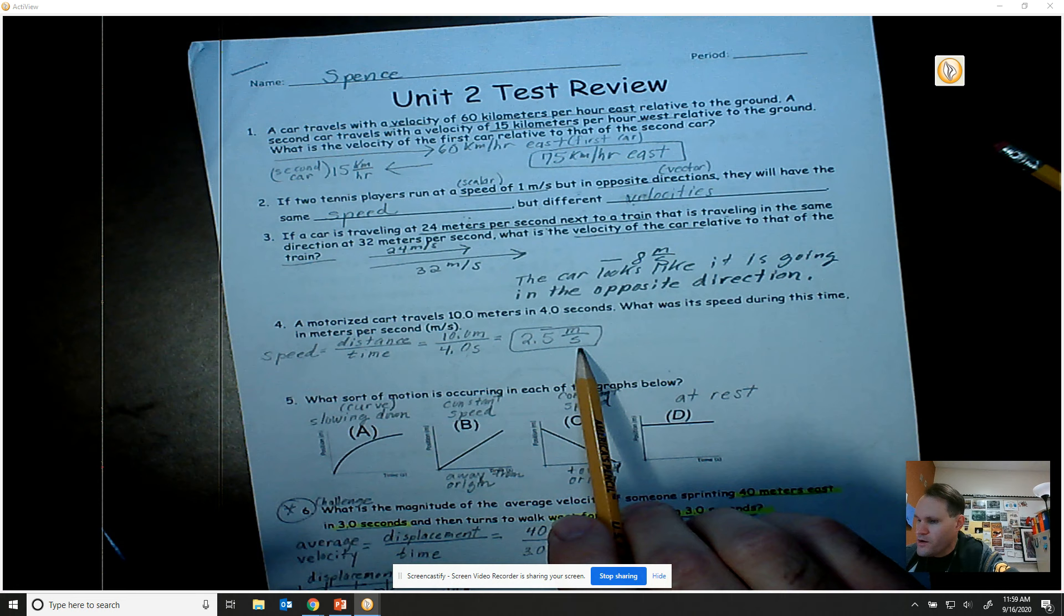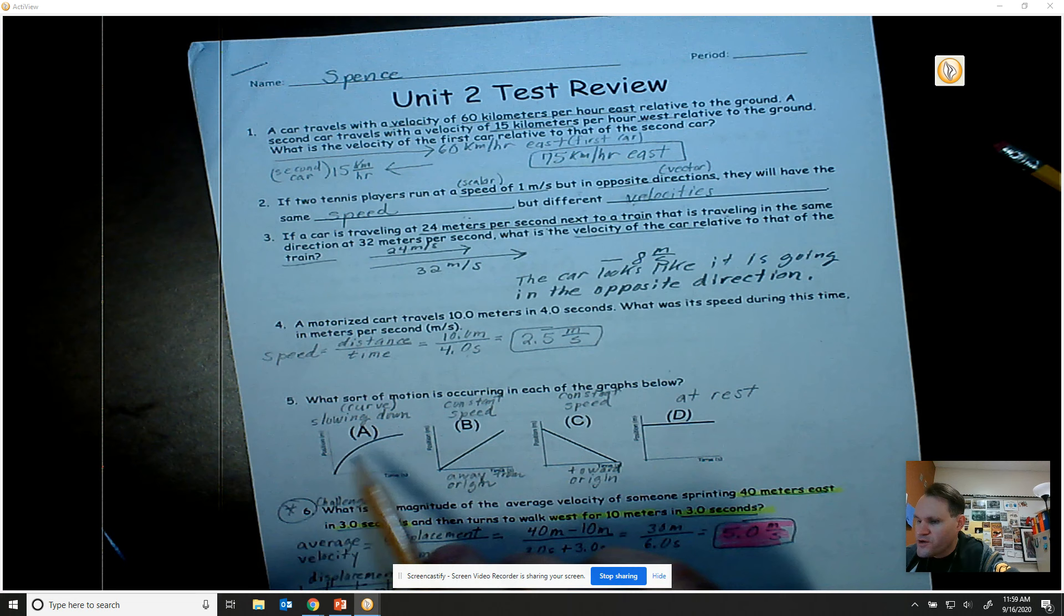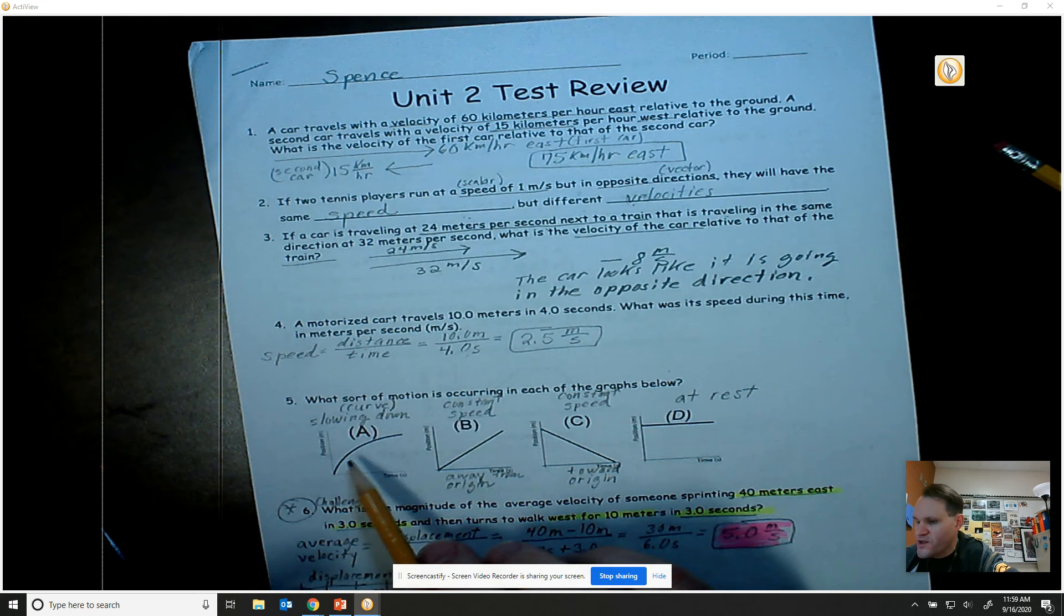Number five: you're looking at four different position versus time graphs, and so what you're having to do is you're having to describe the type of motion going on. Guys, anytime you see a curve, that should be a giveaway that the speed is changing.